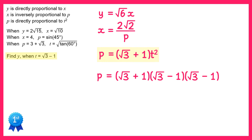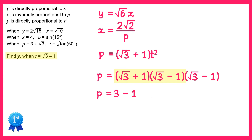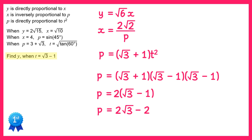We expand the first two brackets: root 3 times root 3 is 3, root 3 times negative 1 is negative root 3, 1 times root 3 is root 3, and 1 times negative 1 is negative 1. This simplifies because the root 3 terms cancel, giving 3 minus 1, which is 2. We then multiply this by the second bracket, root 3 minus 1: 2 times root 3 is 2 root 3, and 2 times negative 1 is negative 2. So when t equals root 3 minus 1, p equals 2 root 3 minus 2.